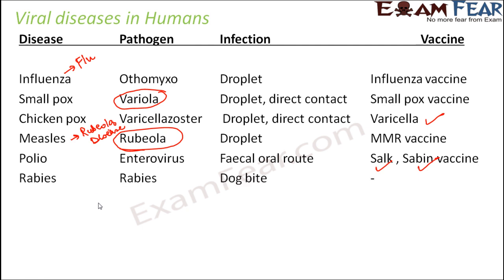Rabies is caused by the rabies virus and spreads through the bite of a rabid dog. This disease is also known as hydrophobia because the patient develops a great fear of water — hydro meaning water, phobia meaning fear. It is very important that whenever a person is bitten by a rabid dog, the wound must be immediately washed with soap to reduce the extent of infection.